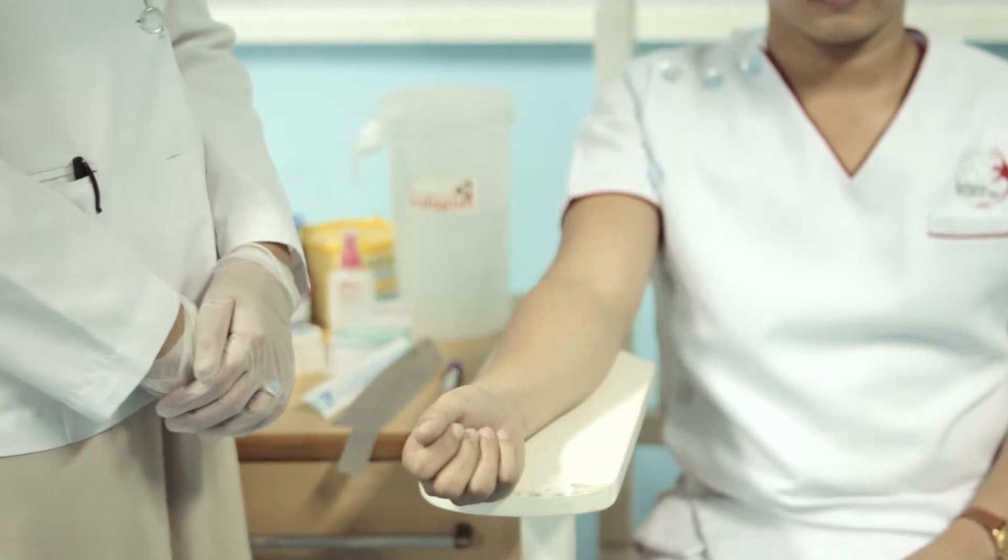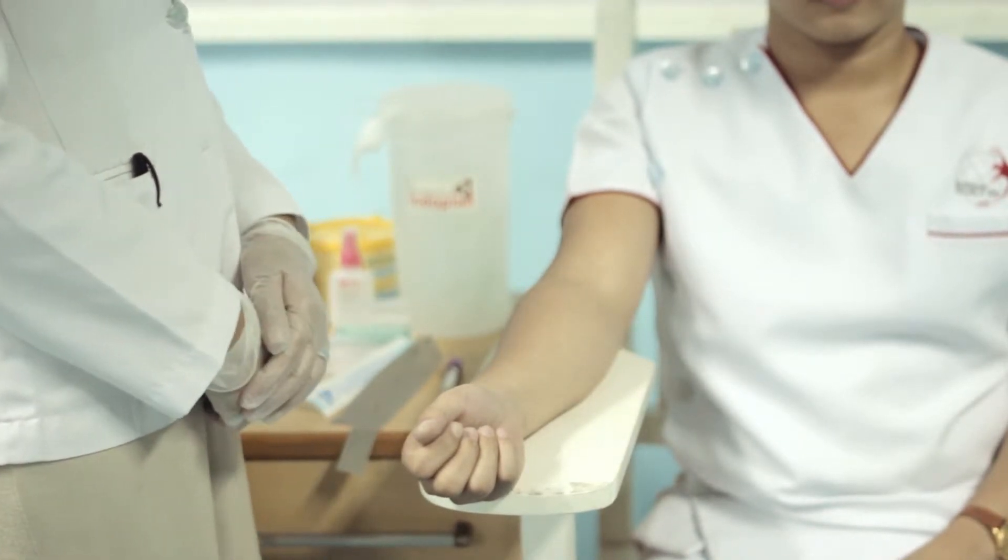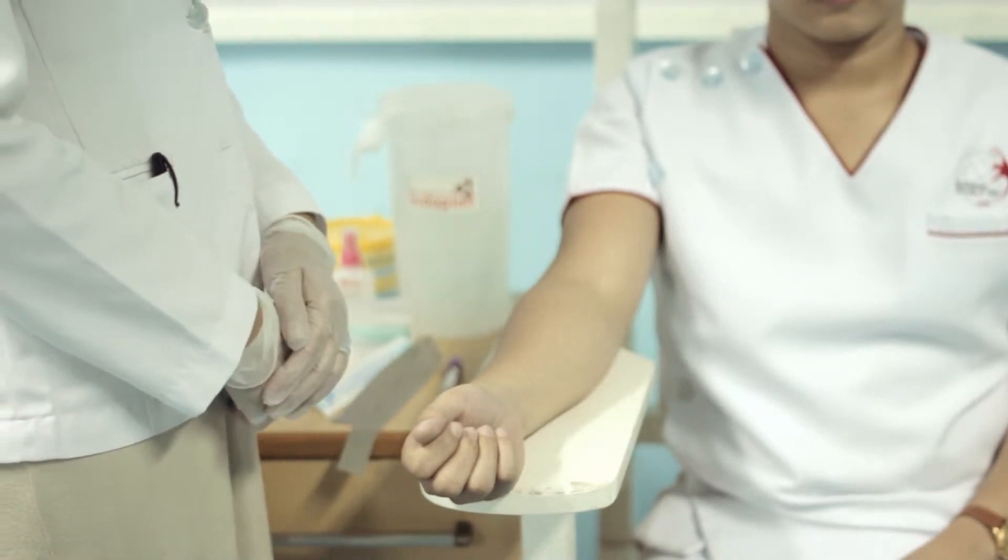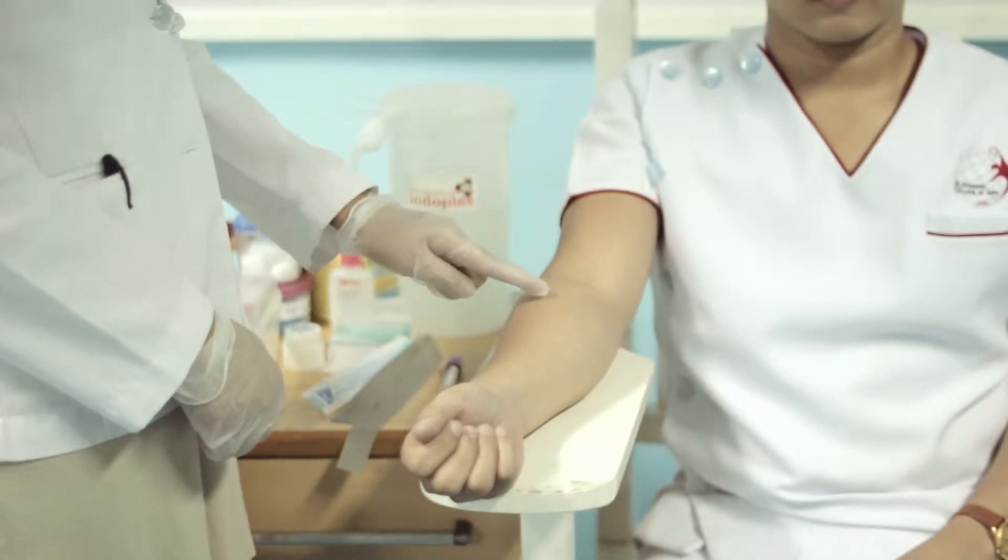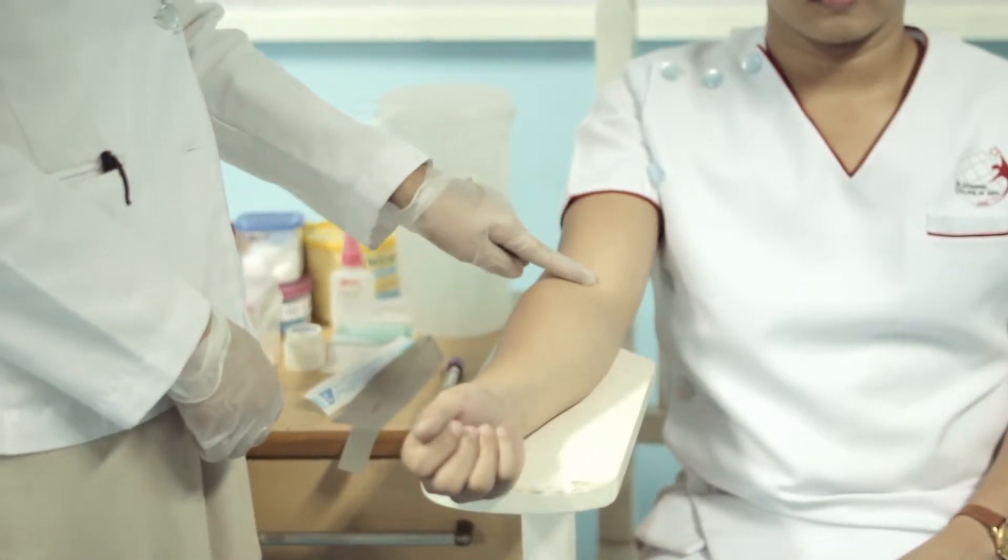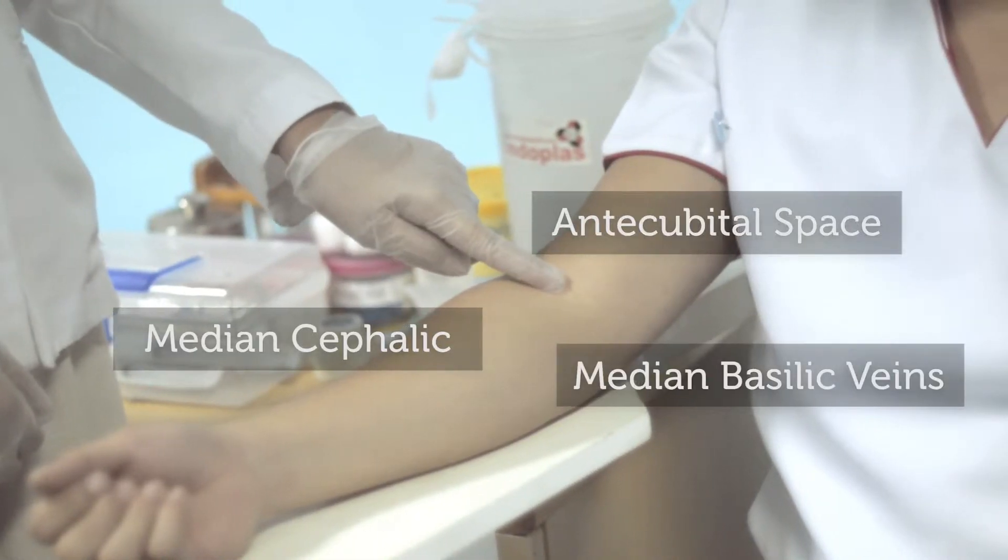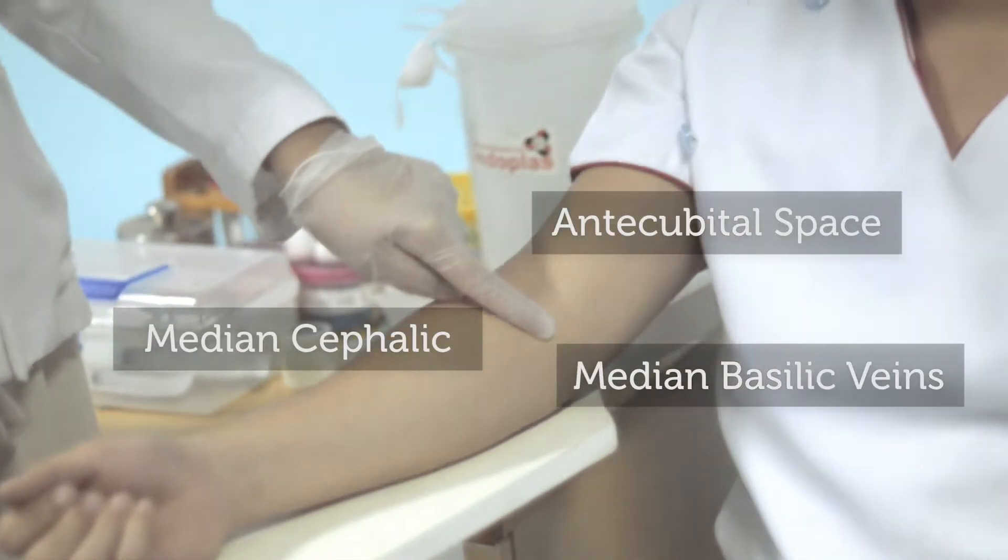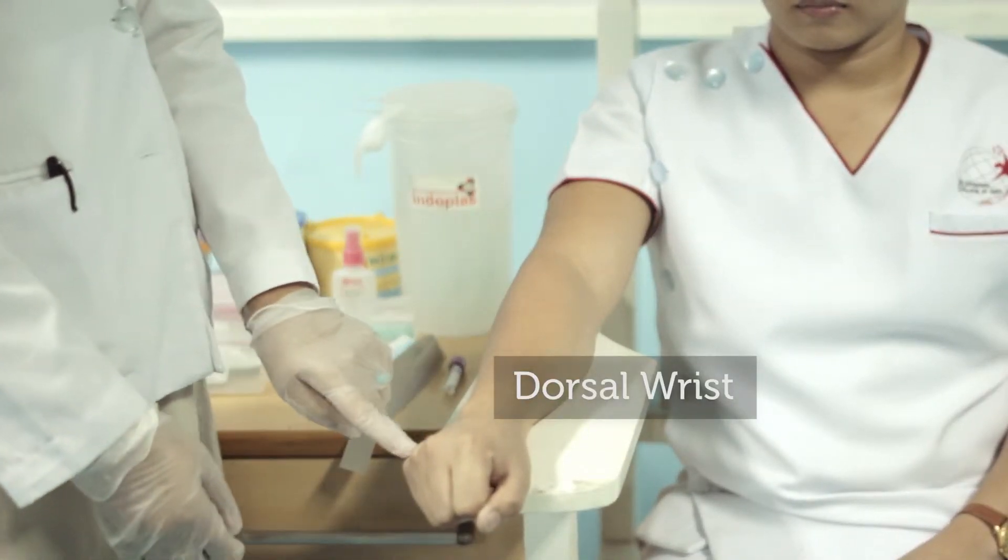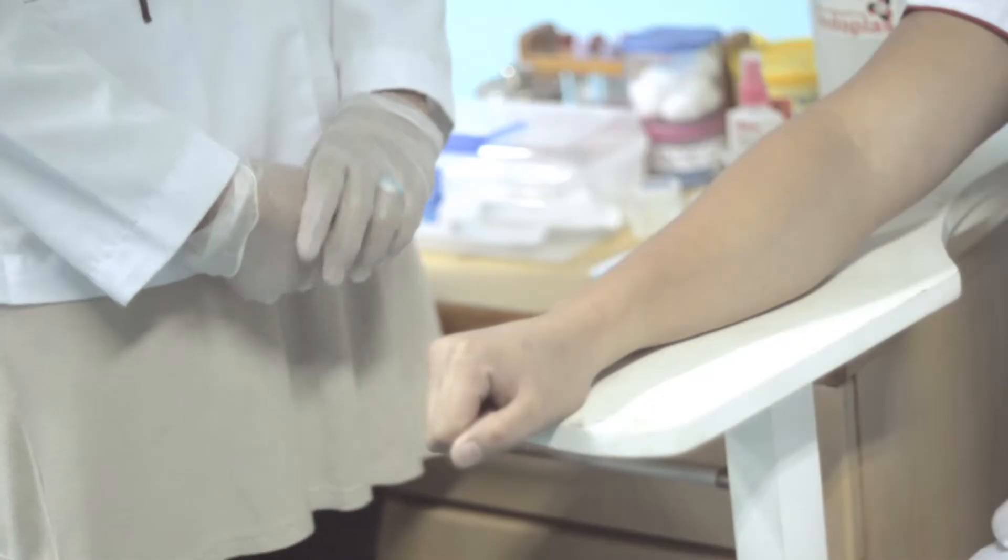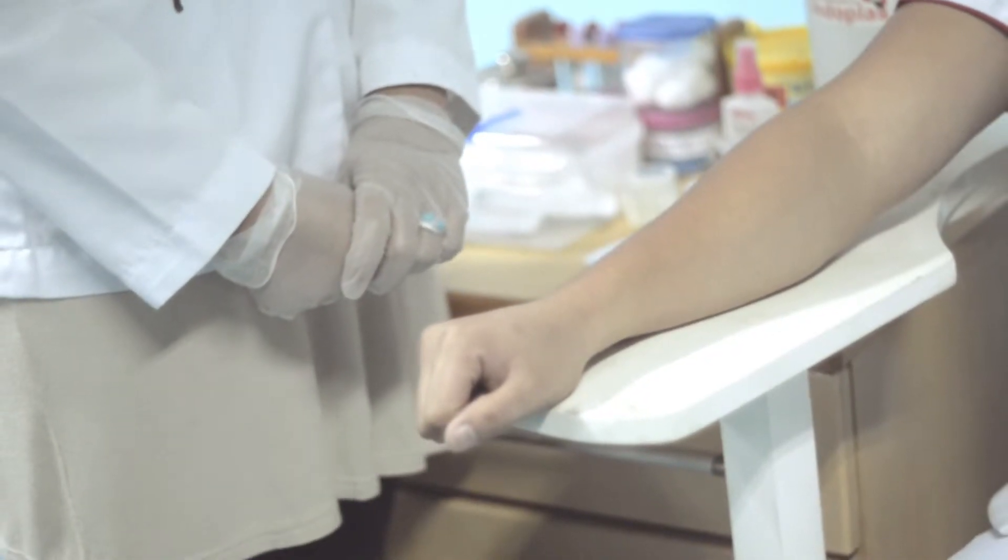The veins most commonly used for this purpose are those in the antecubital space, the depression on the inside arm and front of the elbow, the median cephalic and the median basilic vein. Veins on the dorsal wreath can also be used when it is impossible to collect from the antecubital fossa.